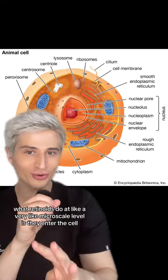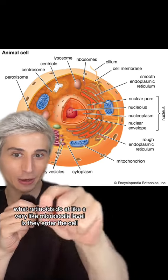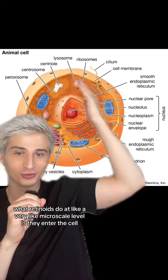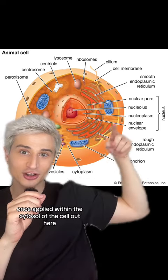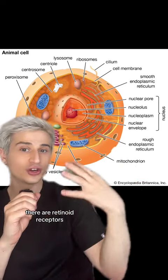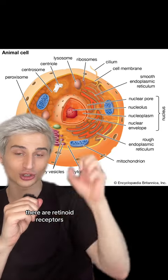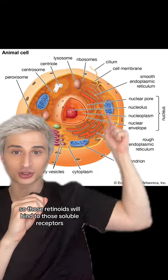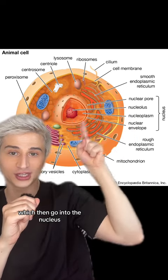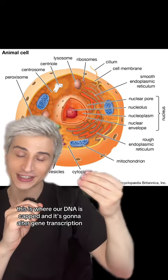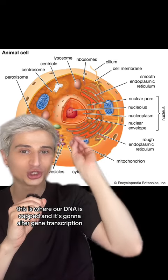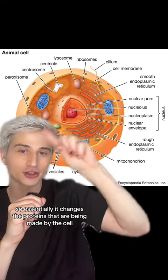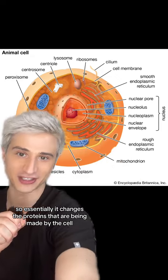What retinoids do at a very micro scale level is they enter the cell once applied. Within the cytosol of the cell there are retinoid receptors. Those retinoids will bind to those soluble receptors, which then go into the nucleus — where our DNA is kept — and alter gene transcription, essentially changing the proteins being made by the cell.